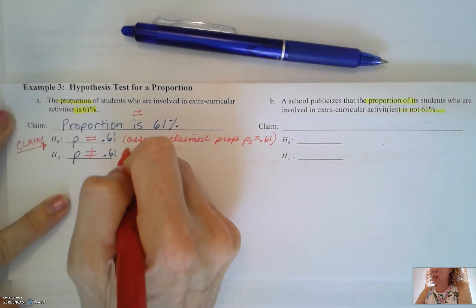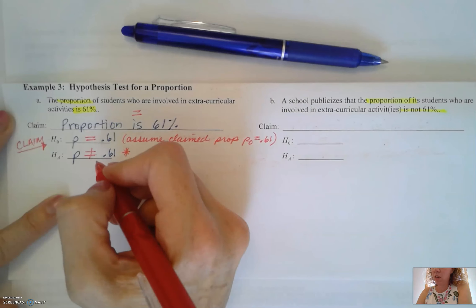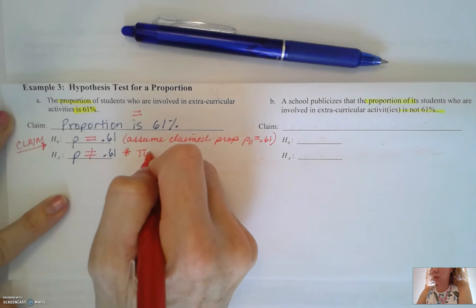I also know here our alternative hypothesis H sub A since it's not equal to this is going to indicate a two tailed test.